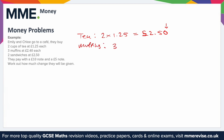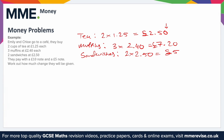Next, muffins: three muffins at £2.40 each, so that's 3 × £2.40, which gives you £7.20. Next, the sandwiches: two sandwiches at £2.50 each, so 2 × £2.50 gives you £5.00. Now all we need to do is add all of these up: £2.50 + £7.20 + £5.00.